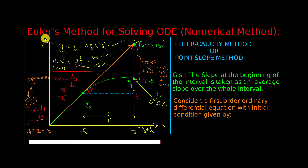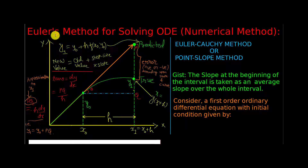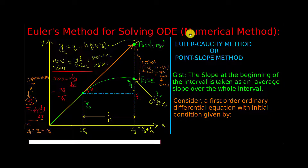In this lecture, we will see the method of Euler to solve ordinary differential equations. This method is also known as the Euler-Cauchy method or point-slope method. The name itself suggests that we are going to deal with slope.